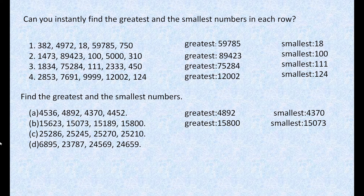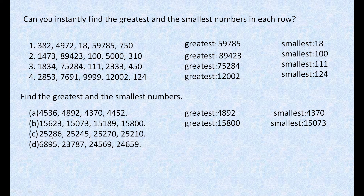Now we see the next example: 25,286, 25,245, 25,270, and 25,210. We use the third rule. The 10,000s place has 2 everywhere, the 1,000s place has 5 everywhere, and the 100s place has 2 everywhere. So we look at the 10s place: 8, 4, 7, and 1 respectively. The greatest number is 25,286 and the smallest number is 25,210.